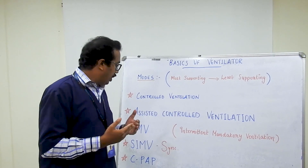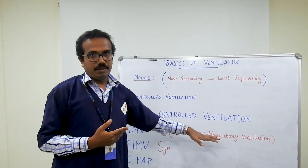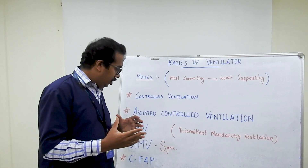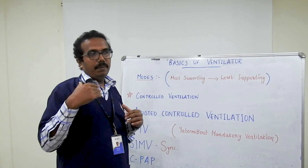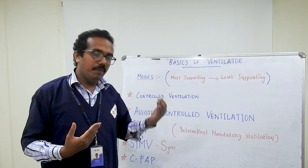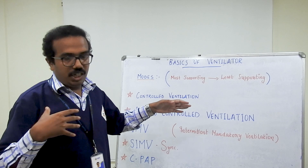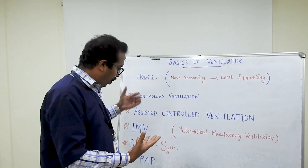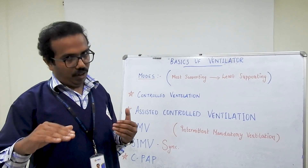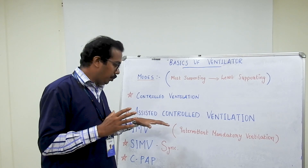Next is intermittent mandatory ventilation. Here the tidal volume and respiratory rate are preset. The ventilator delivers the set tidal volume and respiratory rate. If the patient takes a spontaneous breath, the ventilator will also support that spontaneous breathing, but it still delivers the full preset tidal volume, which means hyperventilation is a real risk in this mode.